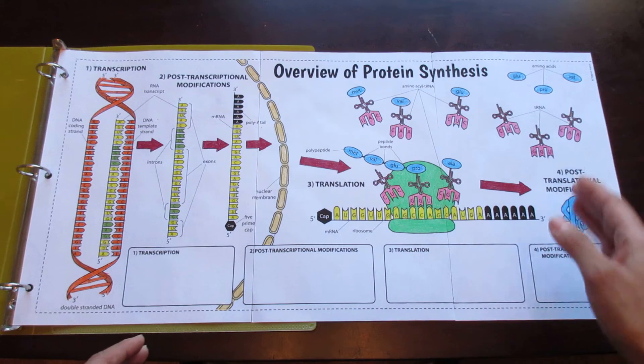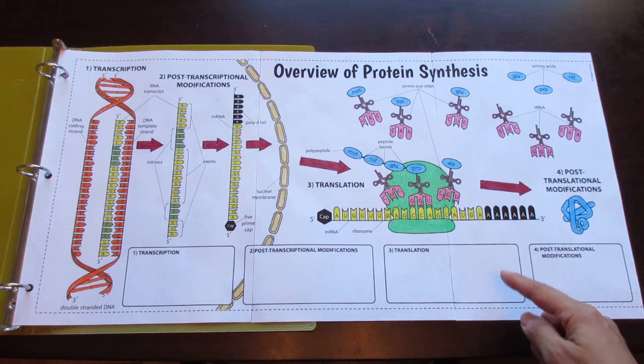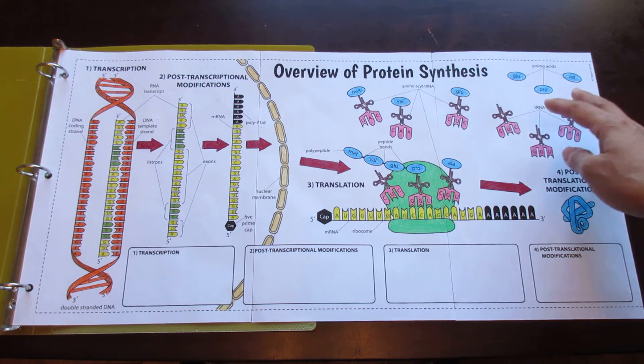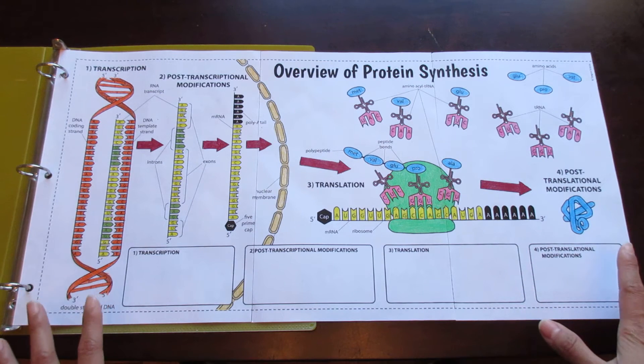Then when we go into the cytoplasm, we see translation happening and there's a description box for that. And we also see post-transcriptional modifications depicted here, and there's also a description box for that.